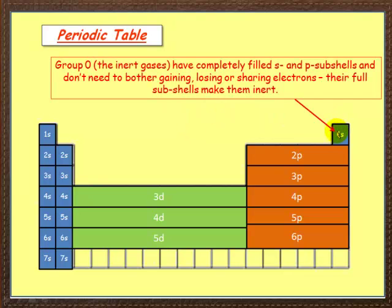And lastly, over here, these are our old friends, the inert gases, group 0 or group 8. They're full. They've got completely filled s and p subshells. They don't bother to gain, lose or share electrons. That makes them really, really inert. They don't react because their outermost subshell is full. They don't need to react.